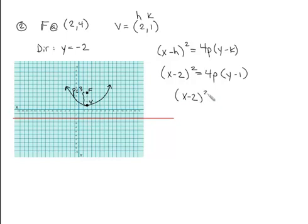X minus 2 squared equals 4 times 3 times Y minus 1. And so that gives us X minus 2 squared is equal to 12 times Y minus 1.